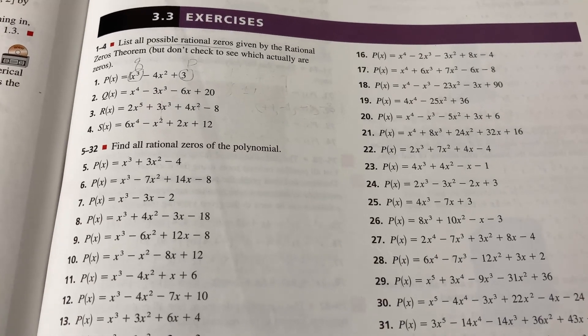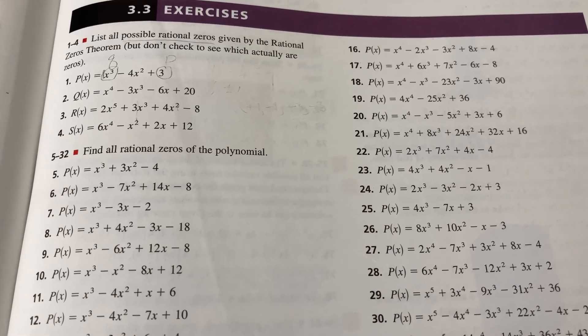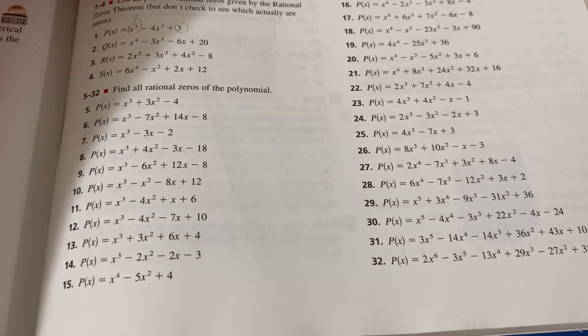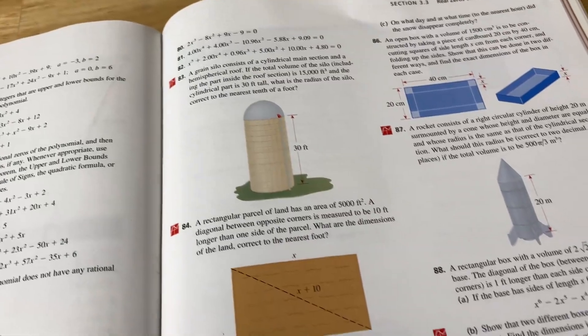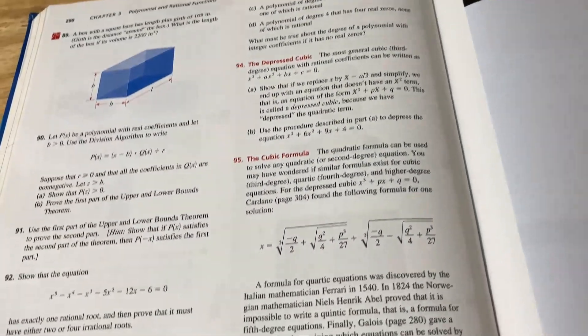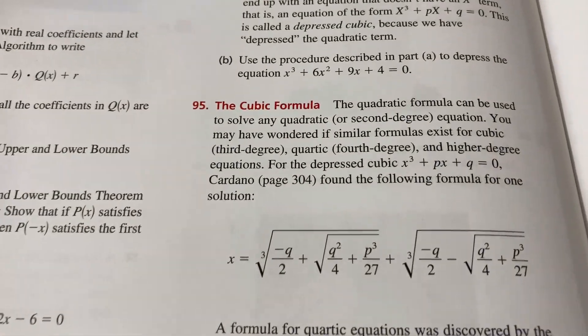These are the exercises for the section on real zeros of polynomials. So you can see there are tons of problems to work through. So it looks like there's 32 on this page. I'm going to turn the page. Wow, look at that. So many examples. It's just completely ridiculous. 95 problems in just that one section. Cool. It talks about the cubic formula.